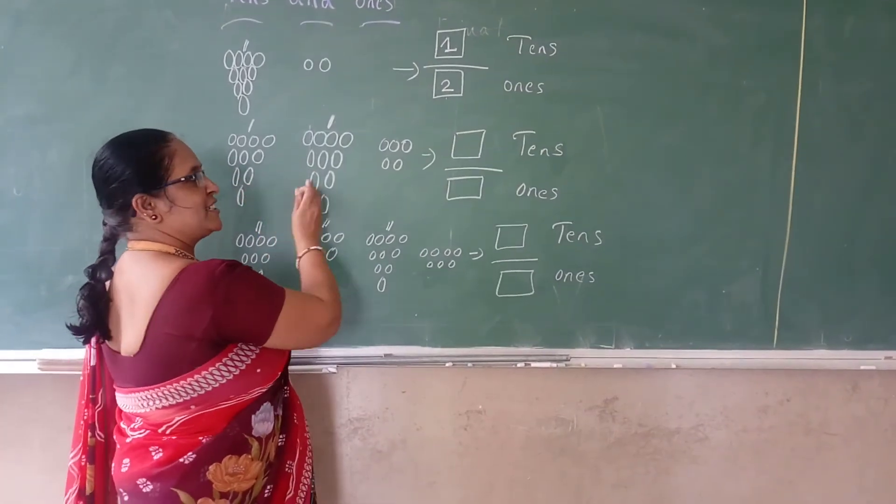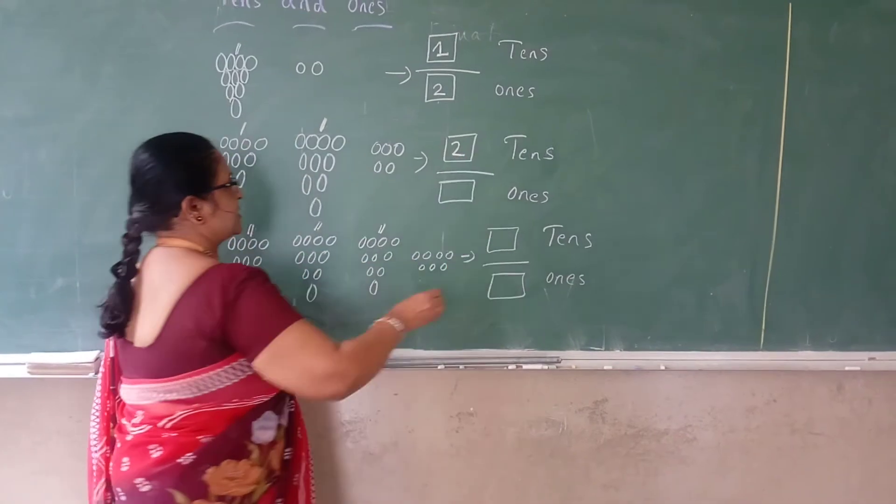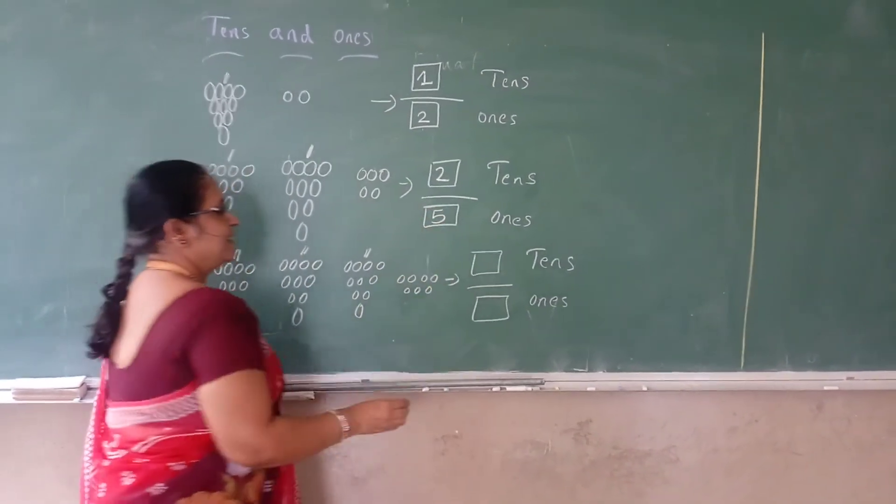Then how many groups are there here? 2, 2 tens. What is this? 2 tens. Then extra how many are there? 5, 5 ones. Okay, fine.